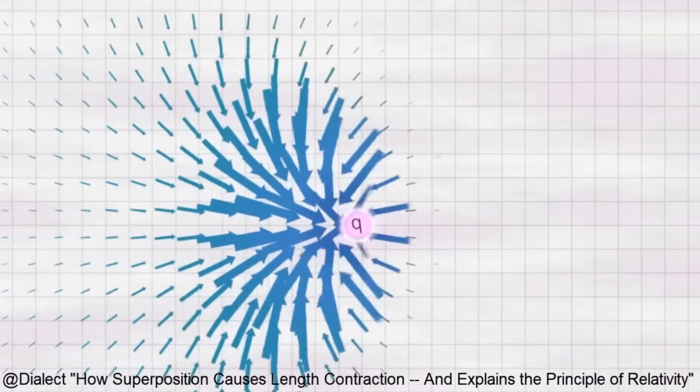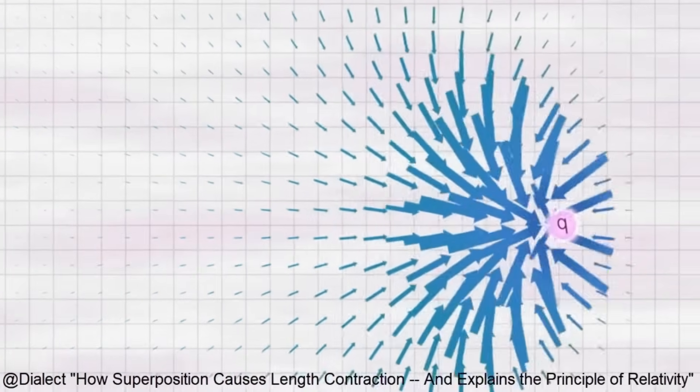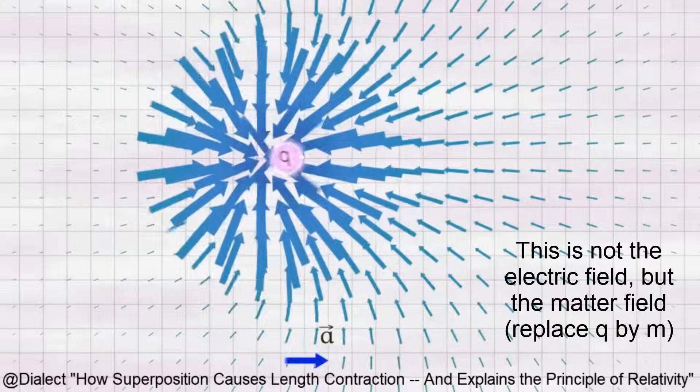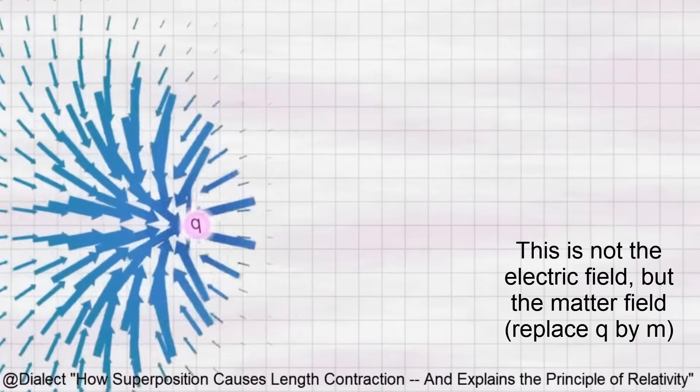Dialect is correct when he stated that whatever you are accelerating relative to, it must be located within your immediate vicinity to ensure locality. But there is a way to account for the rest of the masses of the universe locally, and that is through the matter field that these masses create in all space-time causally connected to them.